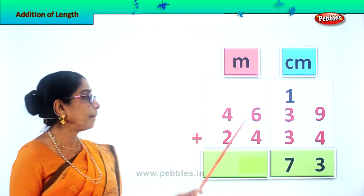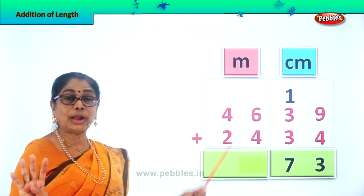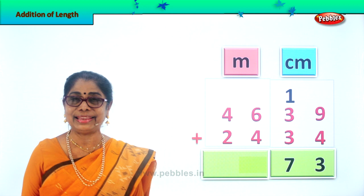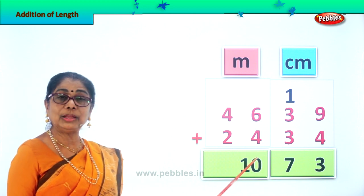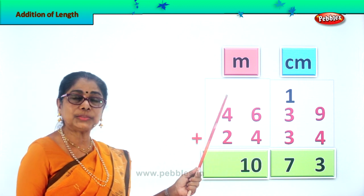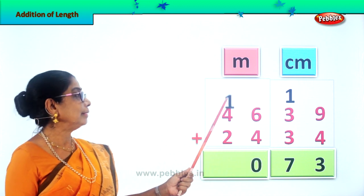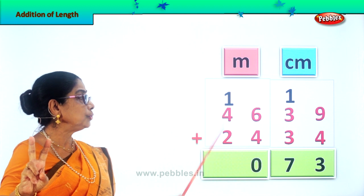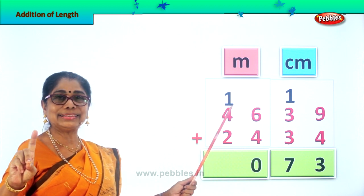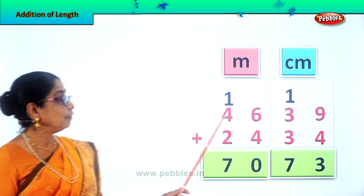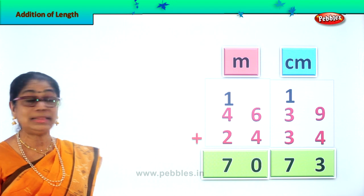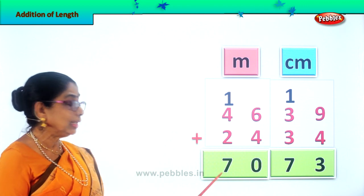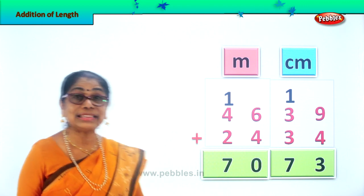Let's get on to the meter side. We have 6 plus 4 is 10. We leave the 0 over there and take the 1 ten right up to the 10's place. Then we add: 4 plus 1 is 5, 5 plus 2 is 7. So we write down 7 over here. 46 meters and 39 centimeters plus 24 meters and 34 centimeters is equal to 70 meters and 73 centimeters.